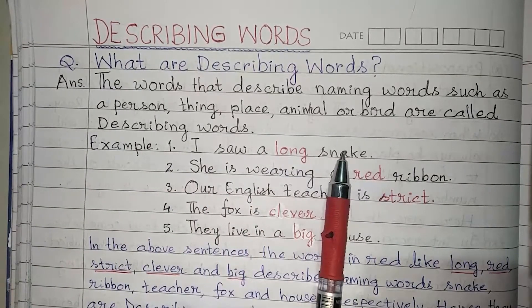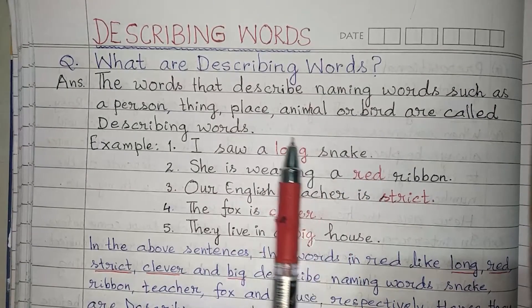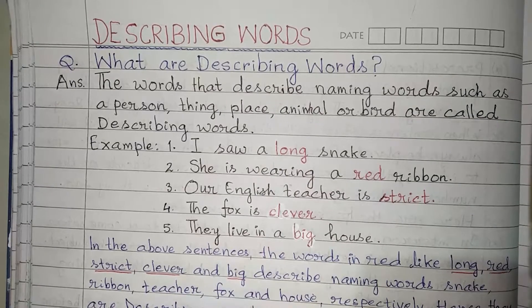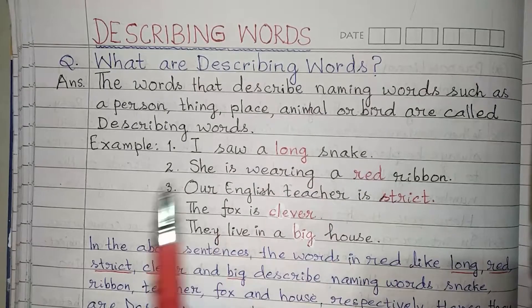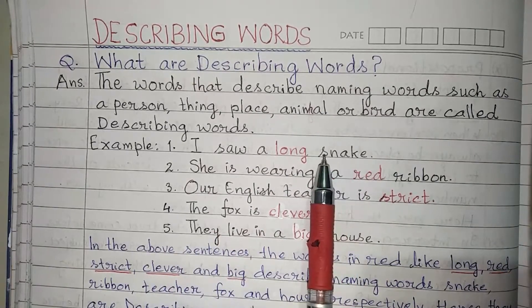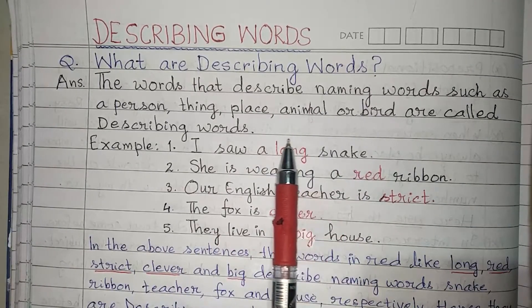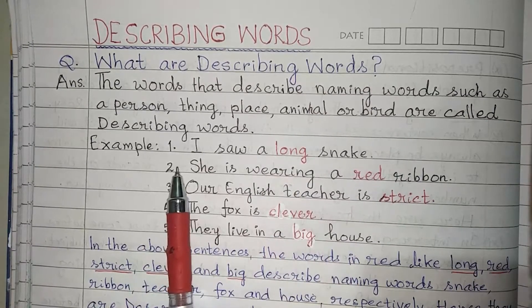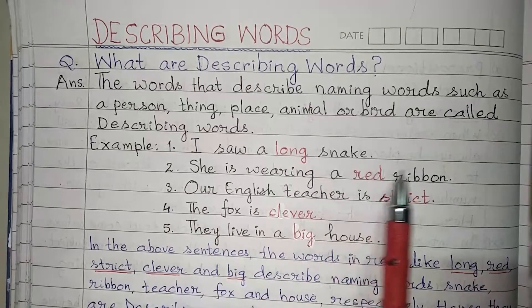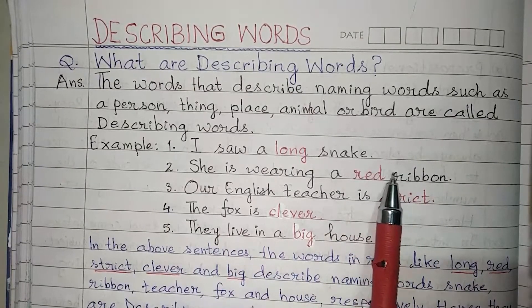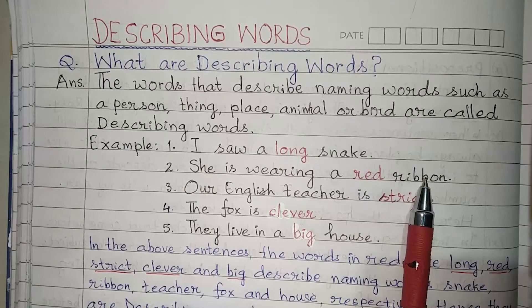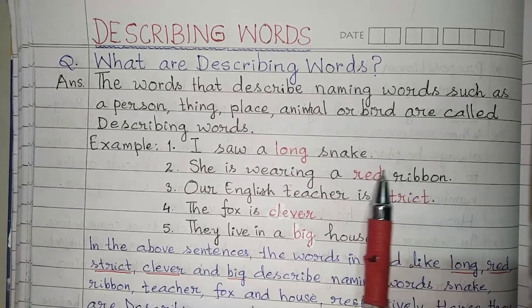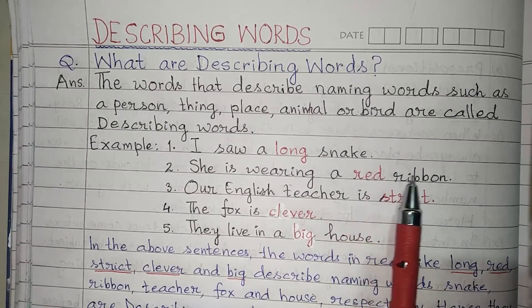Example one: I saw a long snake. In this sentence, the word 'long' describes the snake — it gives information about the snake, telling us what the snake is like. So 'long' is a describing word because it is describing the snake. Example two: She is wearing a red ribbon. The word 'red' describes the ribbon — it tells us the color of the ribbon.